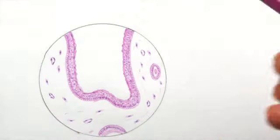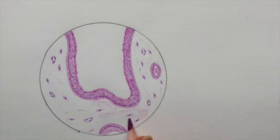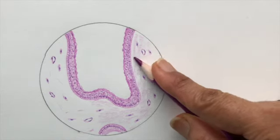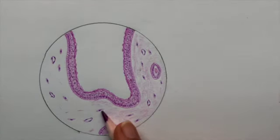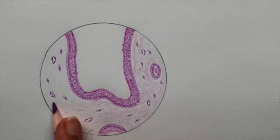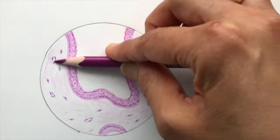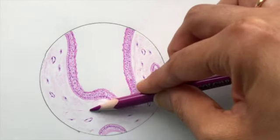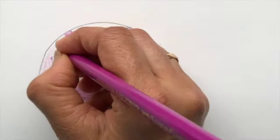Now we shall do the ground substance with the side of the pencil. Just fill up all the area with your eosin pencil, leaving all the luminal areas. The direction of all these collagen fibers and the ground substance should be parallel to the lining epithelium. Now we'll draw the collagen fibers more prominently.